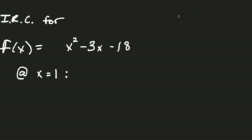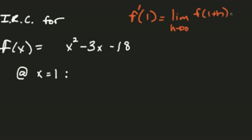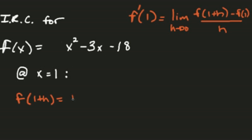Okay so looking at that first let's do f prime of 1 equals the limit as h approaches 0 of f of 1 plus h minus f of 1 all over h. So what does that mean? That means everywhere we see an x we plug in a 1 plus h.